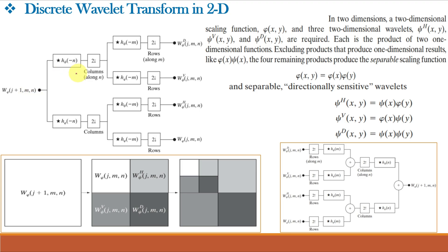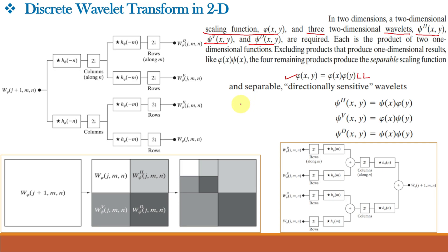For an M×N image, at the first stage we convolve the columns of the image with the Wavelet function and the scaling function and discard every alternate column. Then we do the convolution again and the rows are discarded. The result gives us 4 sub-images of size N/2 × N/2, and this decomposition can be carried out recursively to again form 4 images from the LL band. In 2D DWT, one scaling function and 3 Wavelet functions are required. We obtain a scaling function LL and separable directionally sensitive high-pass filter bands: psi-H giving horizontal details, psi-V giving vertical details, and psi-D giving diagonal details.